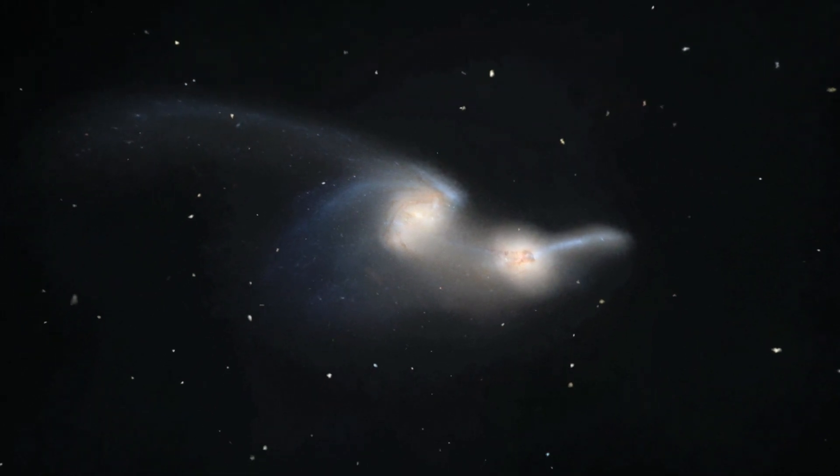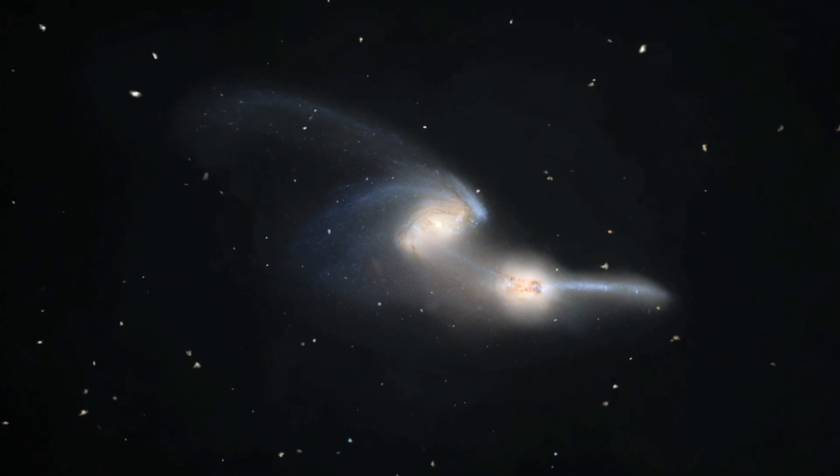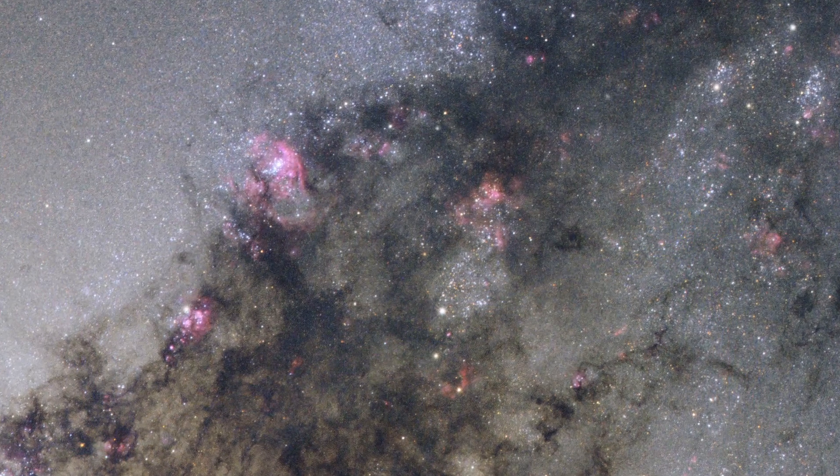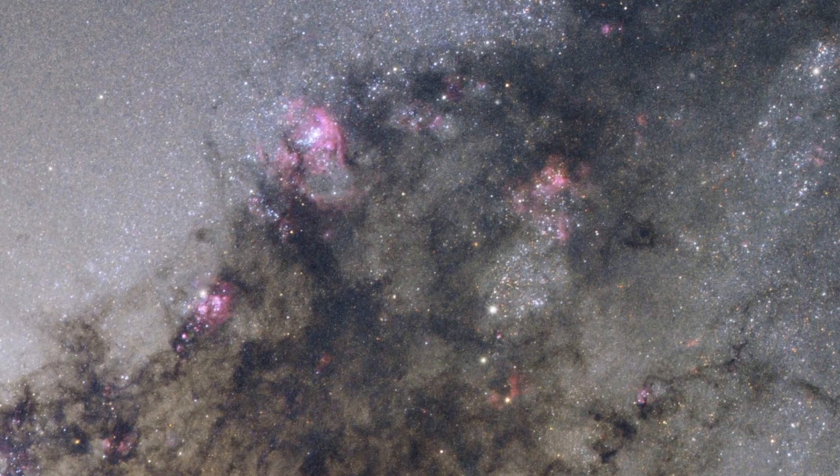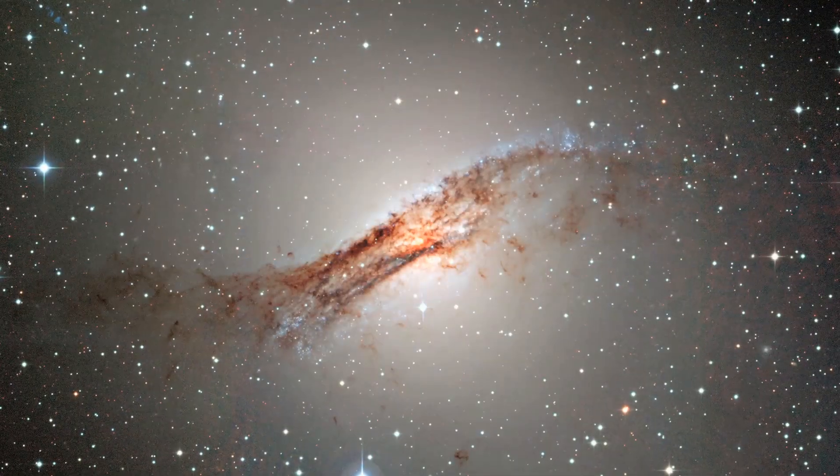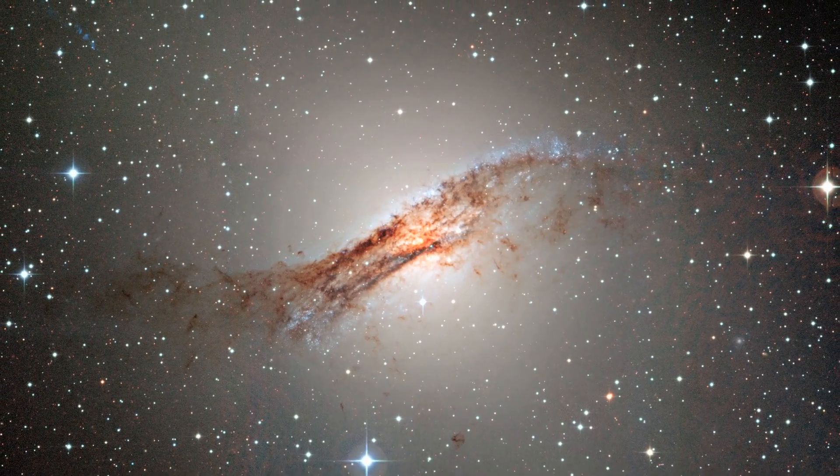Astronomers think that Centaurus A must have collided and merged with another galaxy at some point in the past. The shock waves of this event caused hydrogen gas to coalesce and sparked intense areas of star formation, as seen in the red patches visible here. The turmoil of this collision also explains the warped shape of the galaxy's disk.